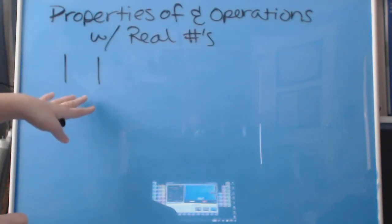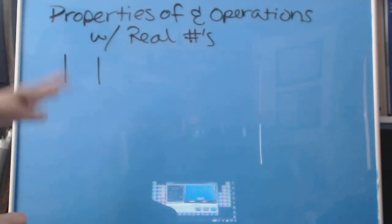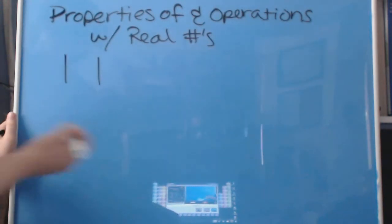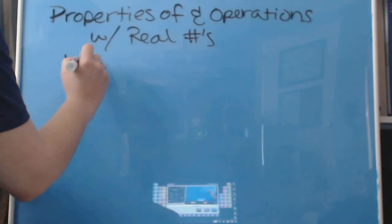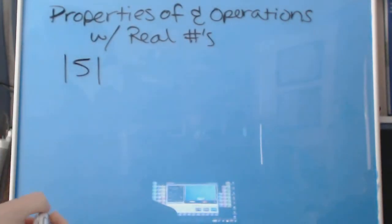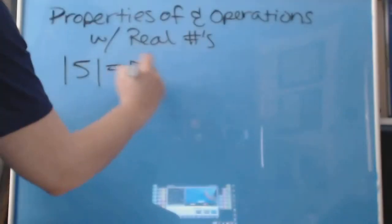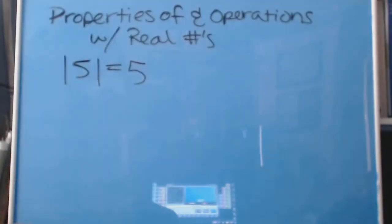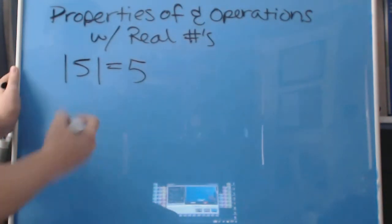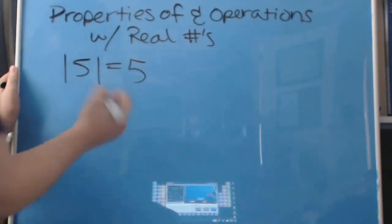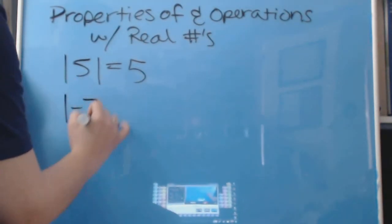So for number 11 out of section 1.3, the absolute value of 5 is 5. Really super easy. And number 13 is the absolute value of negative 7.